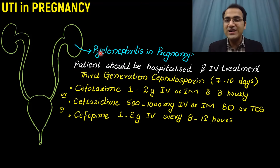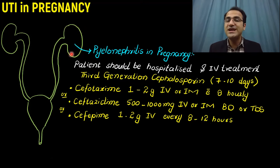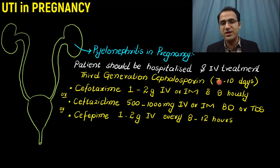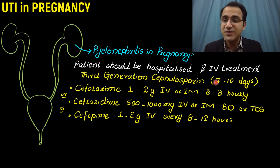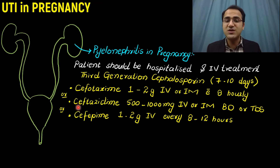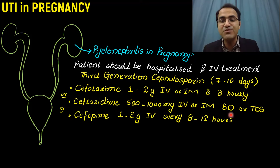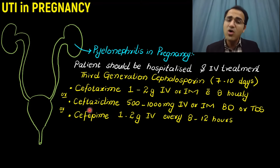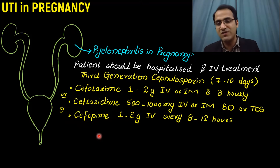For the treatment of pyelonephritis in pregnancy, if the patient has upper urinary tract infection, that patient must be hospitalized and IV treatment given. Third-generation cephalosporins for 7 to 10 days are used: cefotaxime 1 to 2 grams IV or IM every 8 hours, or ceftriaxone 500 to 1000 mg IV or IM two to three times daily, or cefepime 1 to 2 grams IV every 8 to 12 hours.